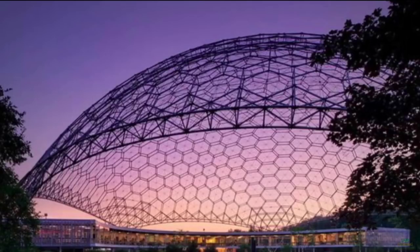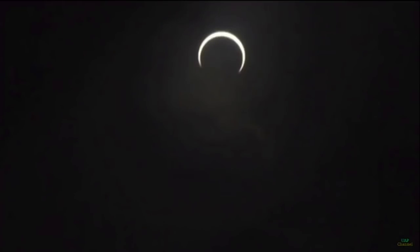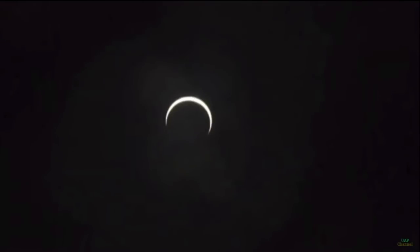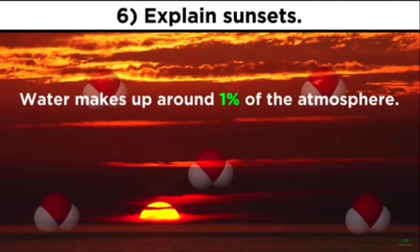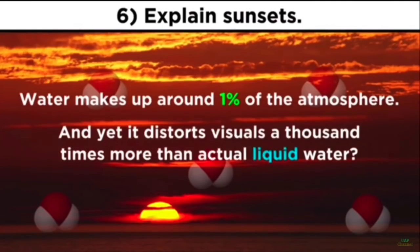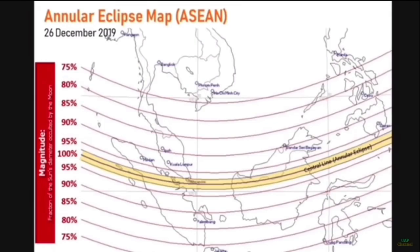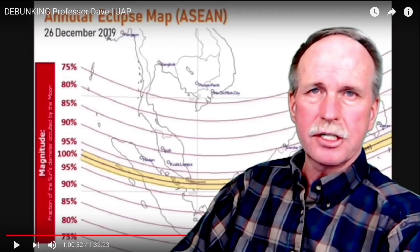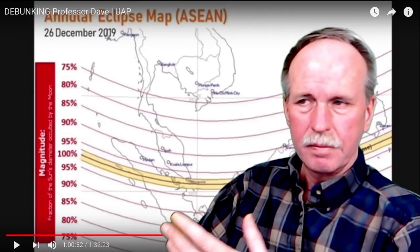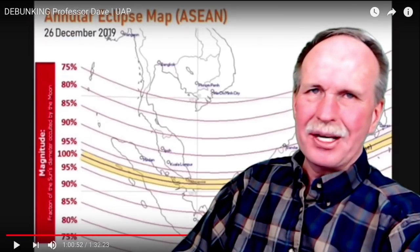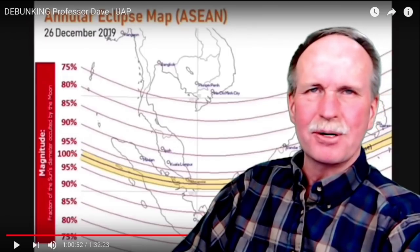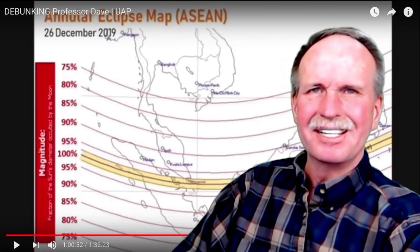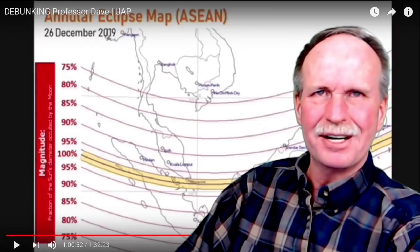How do all those water molecules that make up around 1% of the atmosphere produce a thousand times greater refractive effect than actual liquid water? He's talking about the sunset — we've already moved on from that. No, we haven't, because you haven't answered it yet. Are you going to answer how does a sunset occur on a flat earth model? Please answer the question. I know you can't, so it's just to my personal amusement to poke you with this stick. Tell me, how does a sunset occur on a flat earth model?